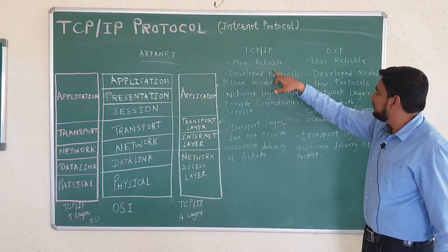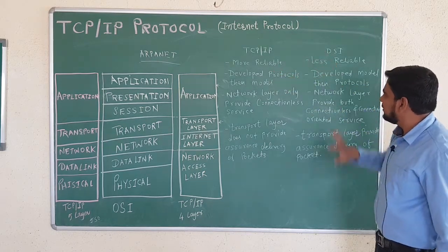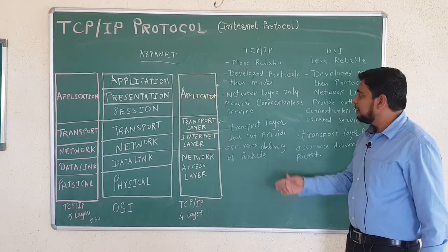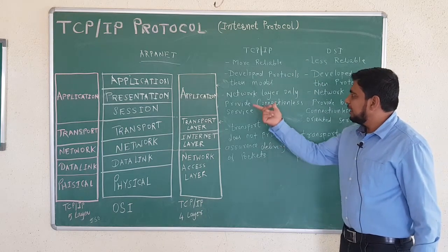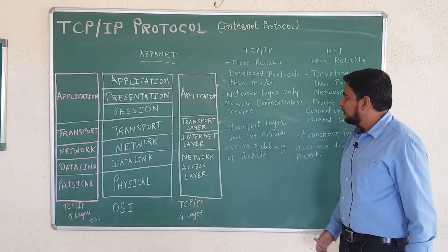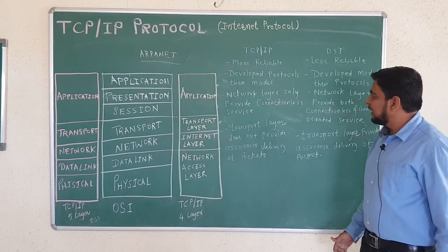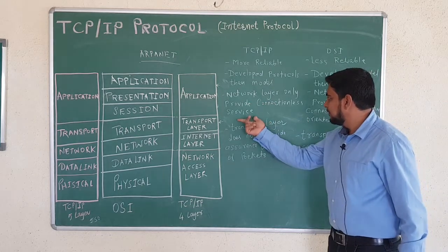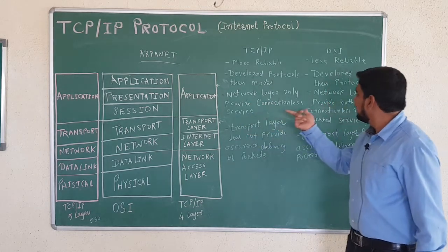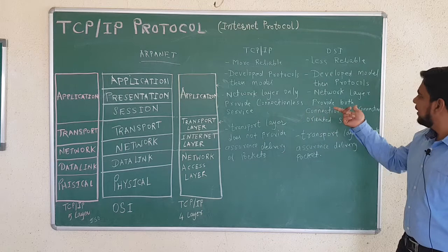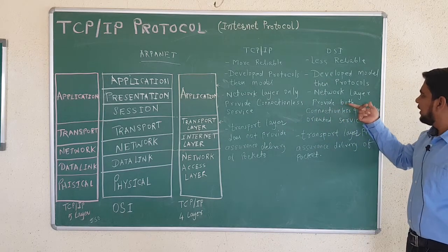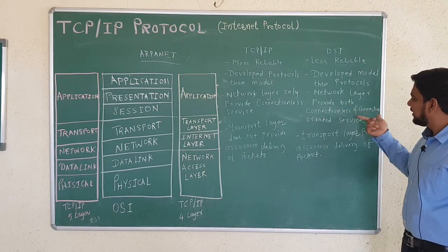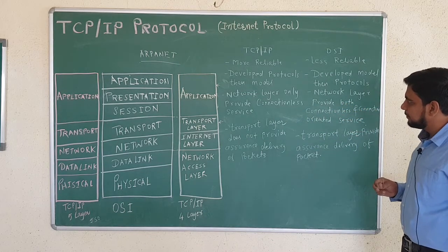TCP/IP is more reliable and OSI is less reliable. In the network layer of TCP/IP, only connectionless services are provided. Whereas in the OSI model, the network layer provides both connectionless and connection-oriented services.